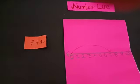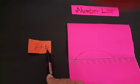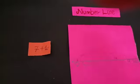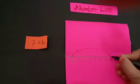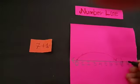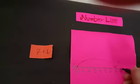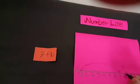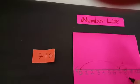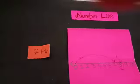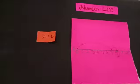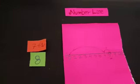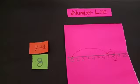How many numbers we have to add more? 1. So 1 time we have to jump. After 7, 1 more jump. What is our answer? 8. What is our answer? 8. So 7 plus 1 is 8.